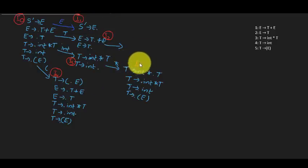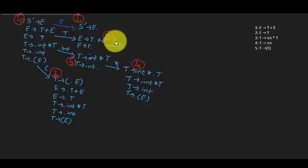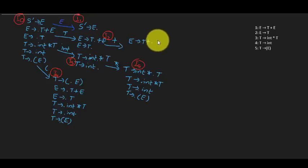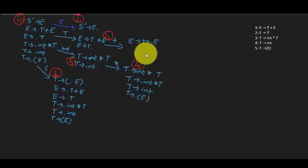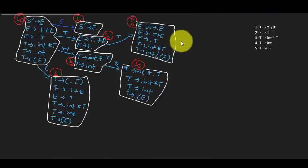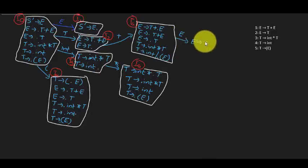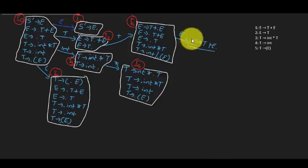Moving the dot after plus, we get E → T+•E. We bring all the rules of E again. Then moving the dot after E gives us E → T+E•, so we've reached the accepting state for this rule.